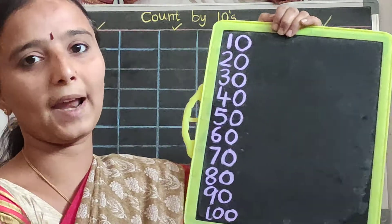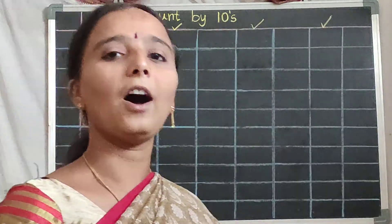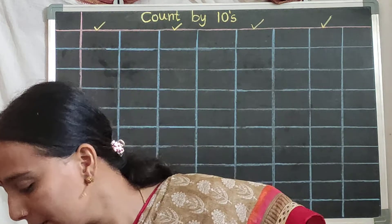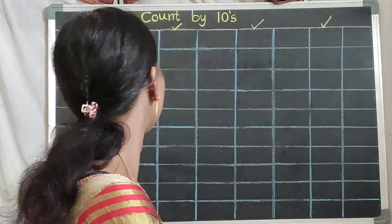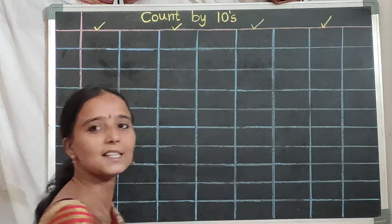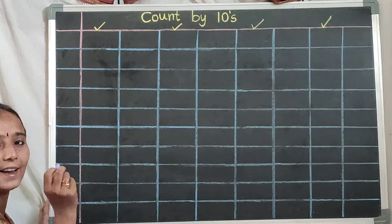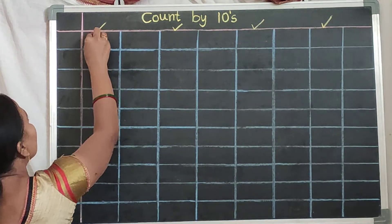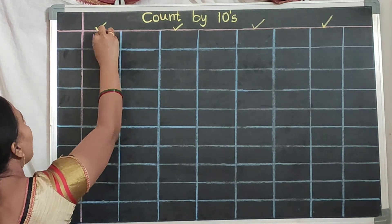Like this you should practice on your slate. And after practicing, take your number work notebook. See here, the same page you can see here. You should write here first — one, zero, ten.